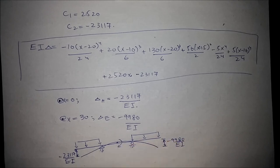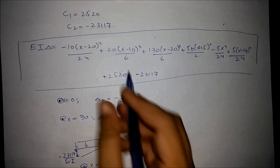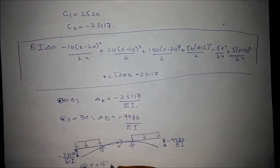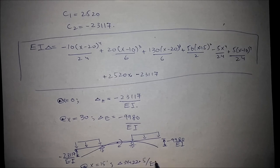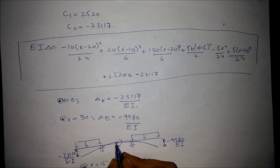Similarly, deflection at point E can also be found. At x = 15, substituting into the deflection equation gives δ_E = 422.5/EI. The positive answer indicates the beam is deflecting upward at point E.